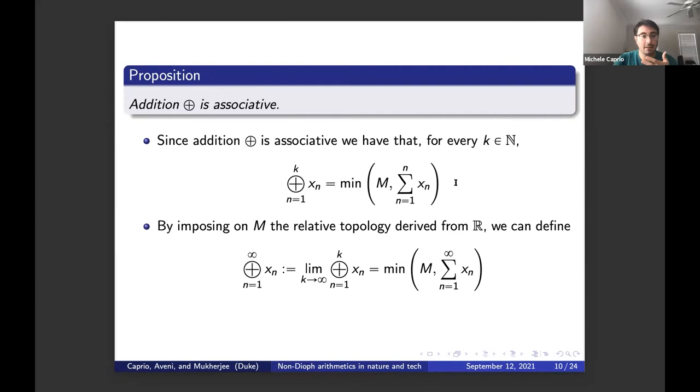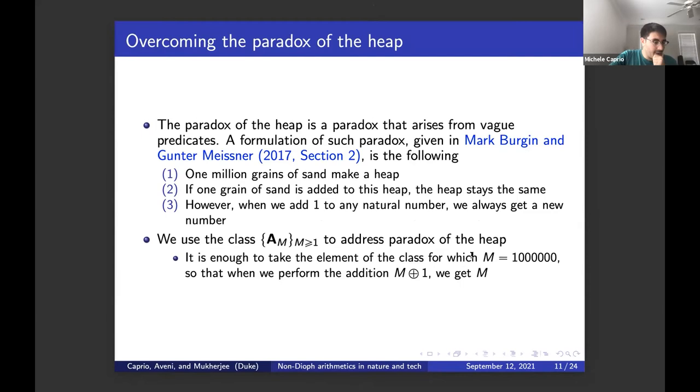They are basically the usual sum and product, but they have an upper bound given by this M that we choose. The first thing we are really interested about is that the addition is associative. This allows us to write finite series as such. A finite series of elements of A_M for N going from 1 to K is going to be equal to the minimum of the bounding element and the actual series. By imposing on M the relative topology derived from R, then we can also define infinite series, as the limit. They will be defined as being the minimum between the bounding element and the result of the usual series.